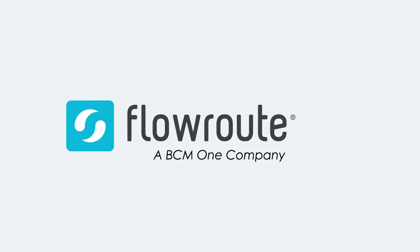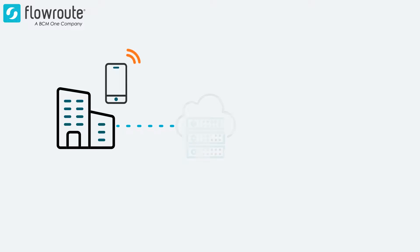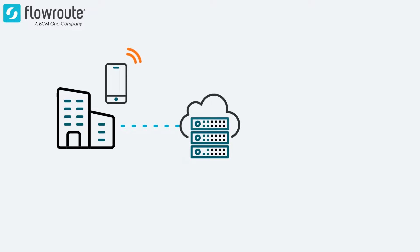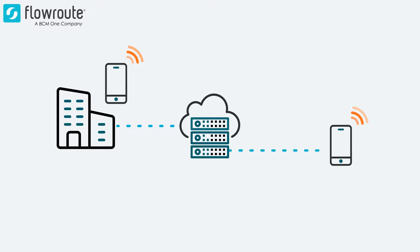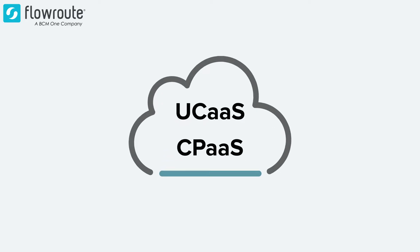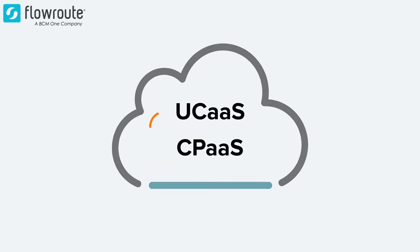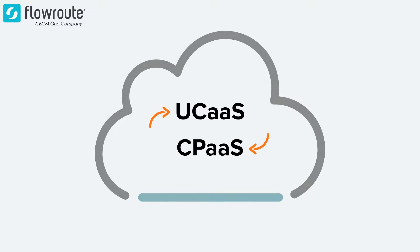When a business makes the decision to migrate its on-premises communication system to a cloud-based communications model, there are several options to choose from. The two main options that businesses often turn to are UCaaS and CPaaS. But what exactly are UCaaS and CPaaS, and how do you know which option is right for building your business's communications stack?